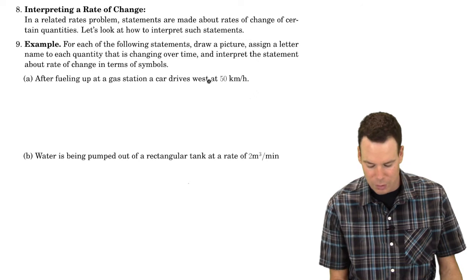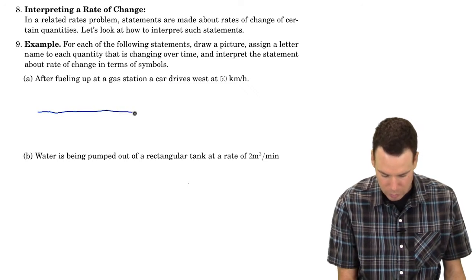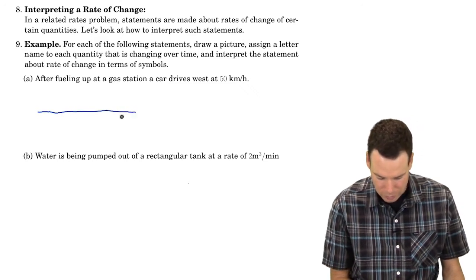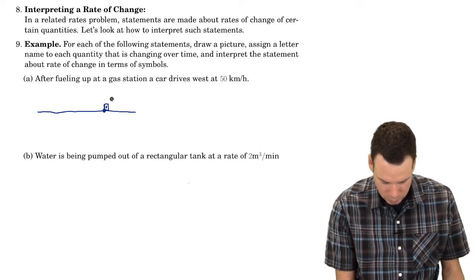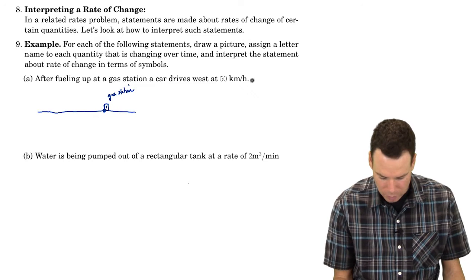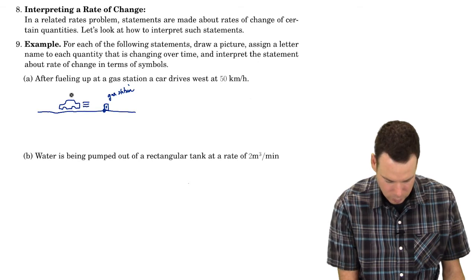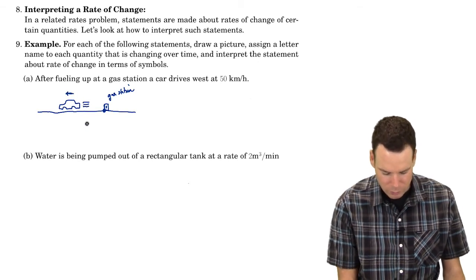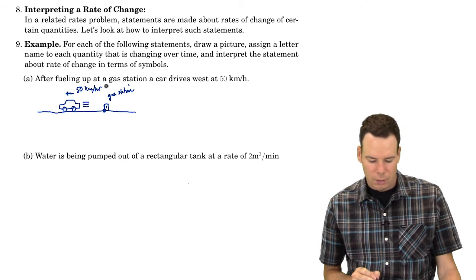For example: after fueling up at a gas station, a car drives west at 50 kilometers per hour. How can we draw a picture representing this? Here's the road on which our car is going to travel, and here's the gas station — a little fuel pump. The car drives west at 50 kilometers per hour in that direction.